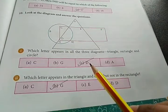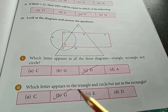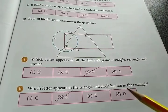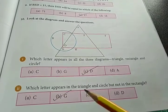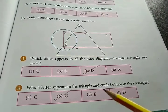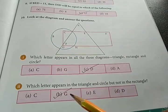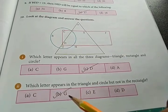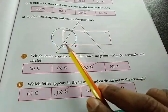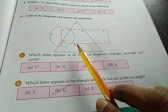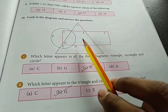Second question: which letter appears in the triangle and circle but not in the rectangle? Meaning which letter is in the triangle and circle, but not in the rectangle? So that is G. Let's see G here. G is in the circle and in the triangle, but it is not in the rectangle.